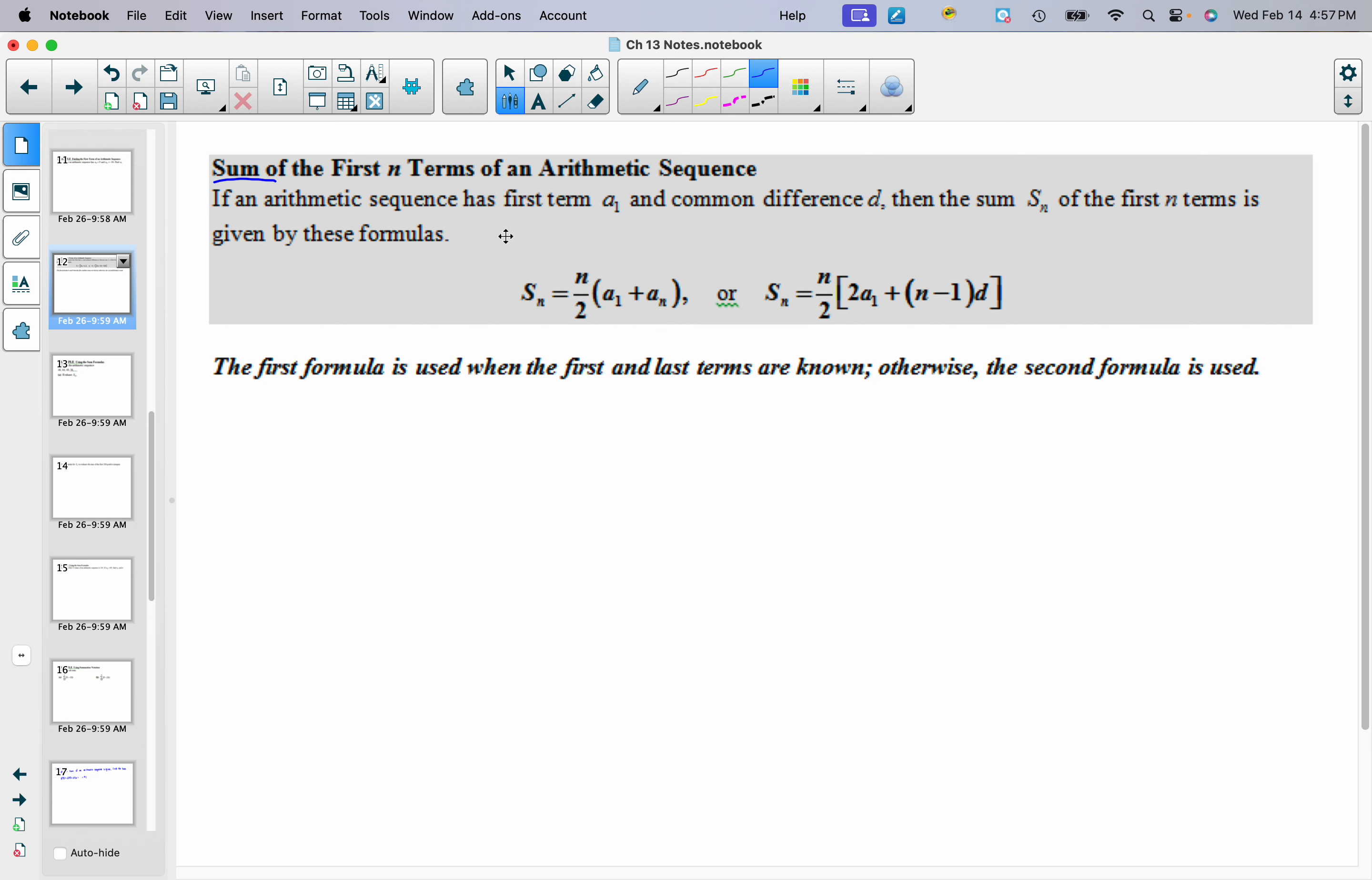So if an arithmetic sequence has first term a₁ and common difference d, then the sum Sₙ of the first n terms is given by these formulas. You've got two formulas and which one you use is going to depend on what information you're given. If you know the first term and the last term of your sequence, then you can use this first formula, but if you don't, you could use this one here.